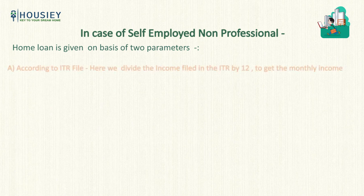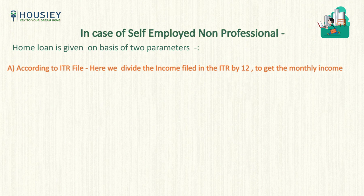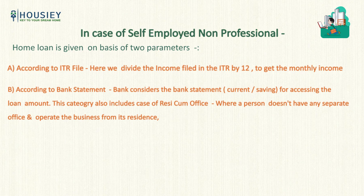In case of self-employed non-professionals, the home loan is given on the basis of two parameters. The first is according to the income tax return file — whatever profit you show in your ITR, we divide it by 12 to get the monthly income. The second is according to the bank statement. In India, about 80% of self-employed non-professionals file a low ITR to save income tax, so the bank analyzes the inflow and outflow of current or savings bank statements to decide the loan amount.